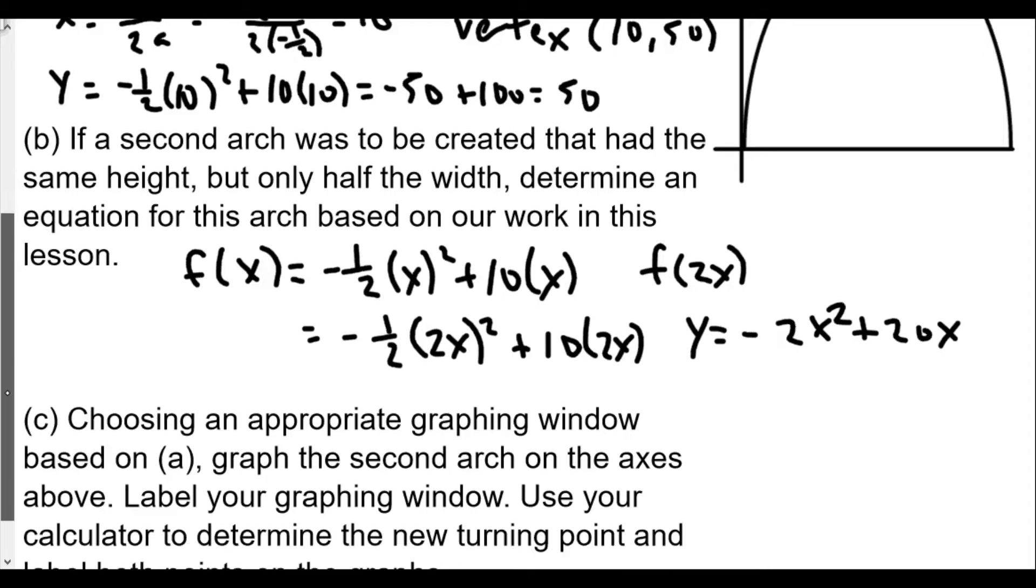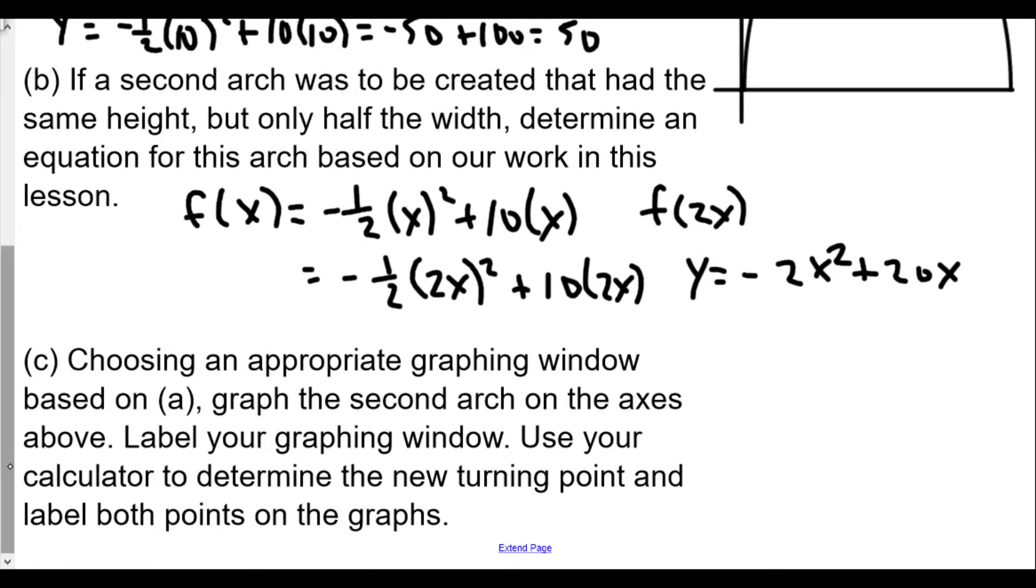Part C says, choosing an appropriate graphing window based on A, graph the second arch on the axis above. Label your graphing window, use your calculator to determine the new turning points, and label both points on the graphs. So we're definitely going to need our graphing calculator for this.